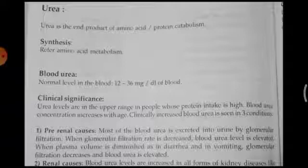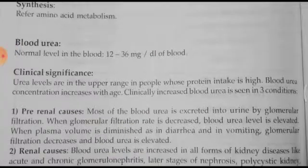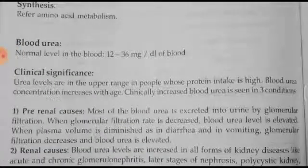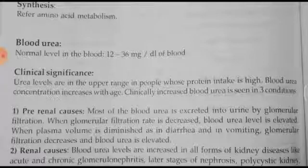Urea levels are in the upper range in people with high protein intake, and blood urea concentration increases with age. Urea is a condensation product of ammonia and carbon dioxide formed in the urea cycle — the toxic ammonia is converted to less toxic urea and excreted. Urea is synthesized in the liver and excreted by the kidney.